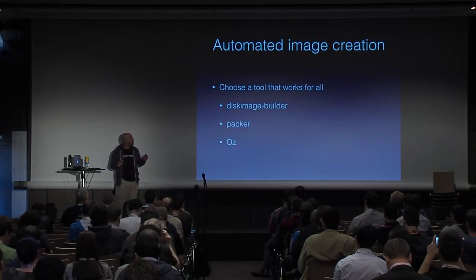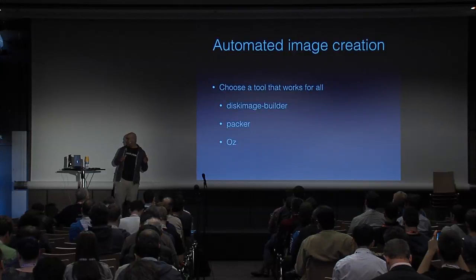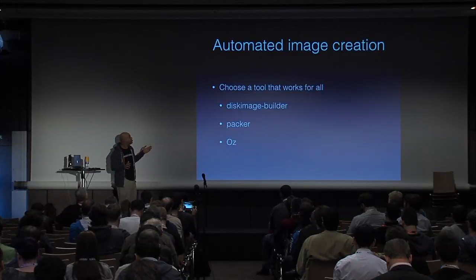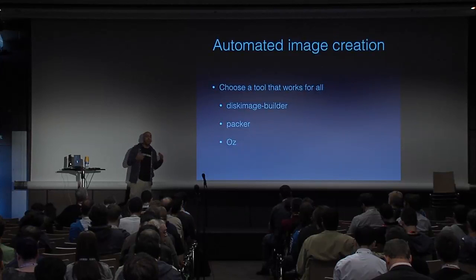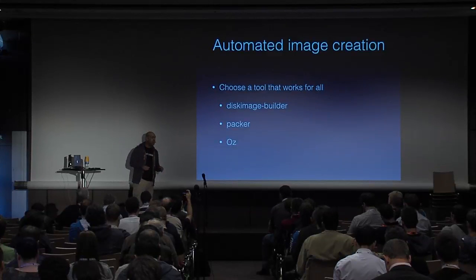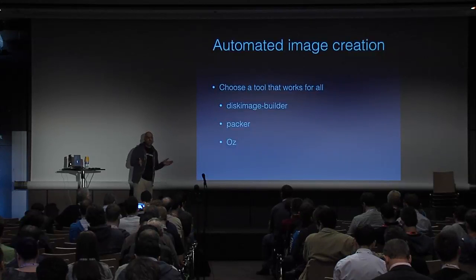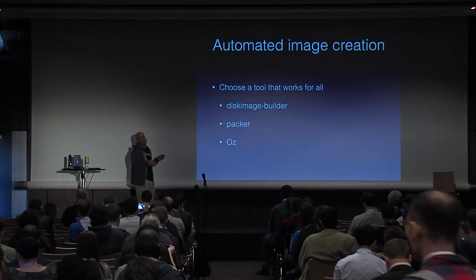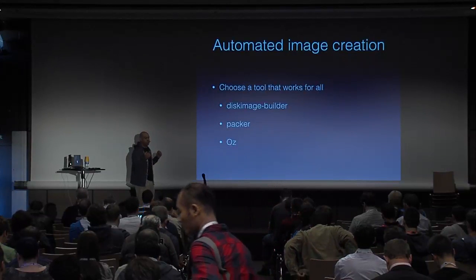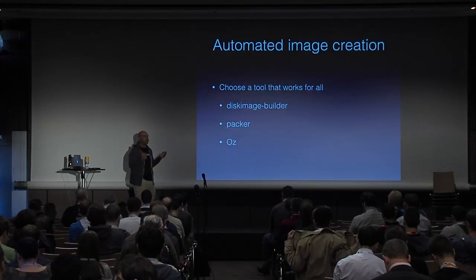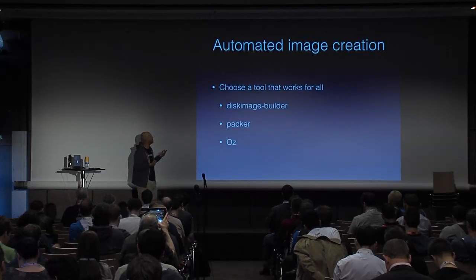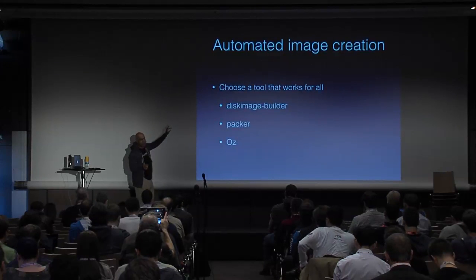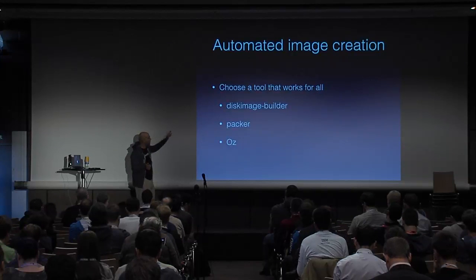We've talked about the lifecycle — now let's talk about tools and the automated creation process. There are a lot of great tools; just choose one that works for all. Back in 2011-2012, I was all about Boxgrinder, but the only problem was Boxgrinder only did Red Hat-based distros. These three are my favorites today — Disk Image Builder, Packer, and Oz. They do all of the distros and do them repeatedly in an automated fashion.